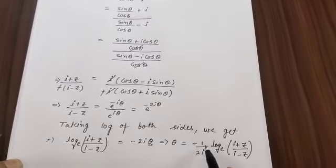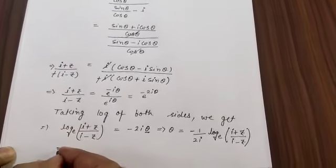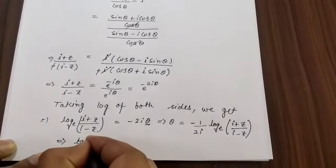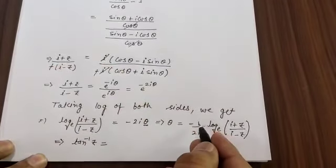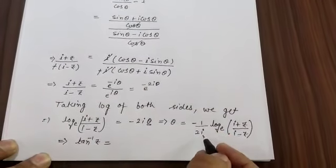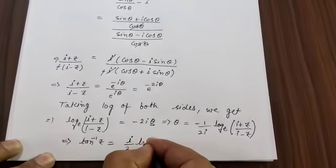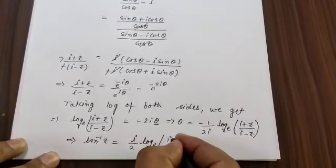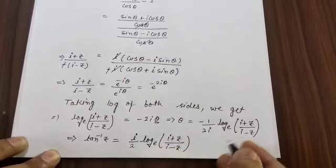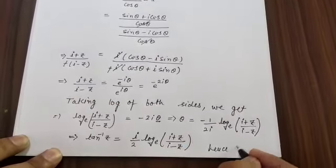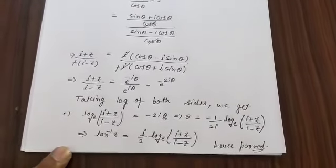Now, -1 = i², so -1/(2i) = i²/(2i) = i/2. Since θ = tan⁻¹(z), we have tan⁻¹(z) = (i/2) * log_e((i+z)/(i-z)). Hence proved. This completes question number one based on circular and hyperbolic functions.